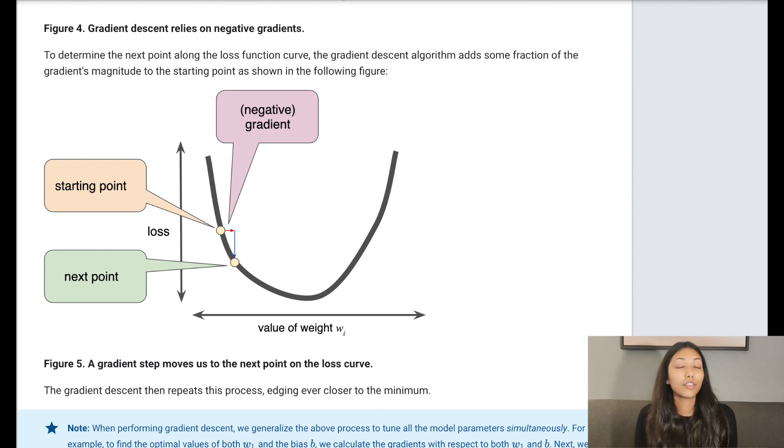So here's another important question that comes up. What determines how you change your w values? Like how much would you change the values of your weights by? What actually determines that? That is actually determined by the learning rate. So let's talk about that.